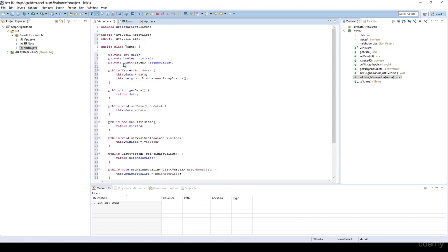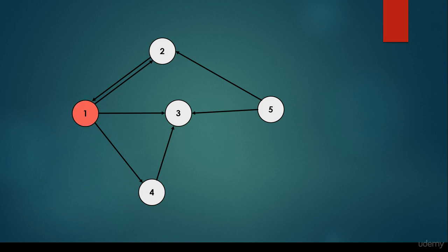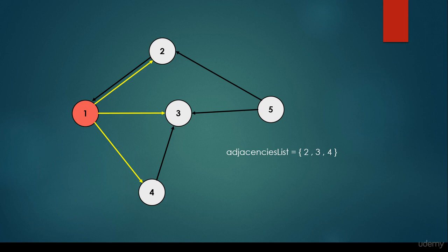If it's not clear why we need this neighbor list — suppose we have a graph made out of five vertices: one, two, three, four, and five. The data is this integer. We have several edges; it is a directed graph. We have edges pointing from one to two, one to three, one to four; an edge from two to one; from four to three; from five to three and five to two. The neighbor list for vertex one contains three neighbors: two, three, and four. So the adjacency list stores two, three, and four.